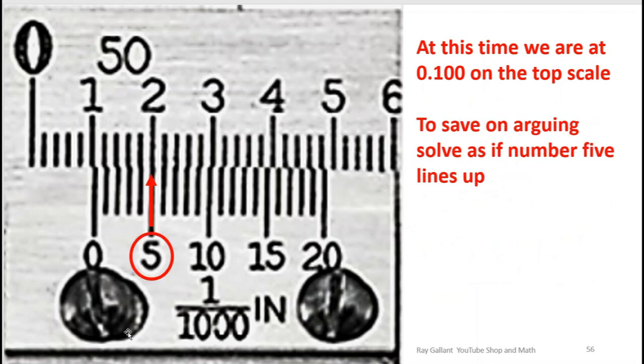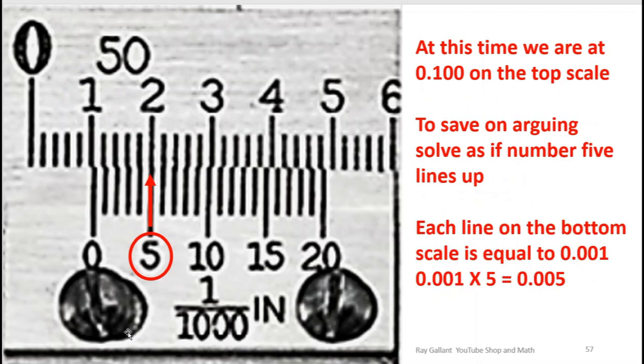So the bottom scale. To save arguing we're just going to say that the five lines up. The most difficult part about this is reading the scale. Therefore each one of these lines equals one thou.